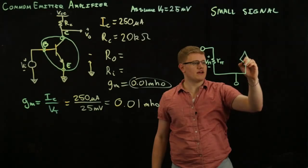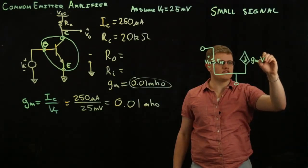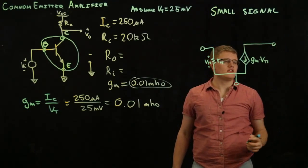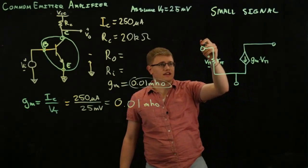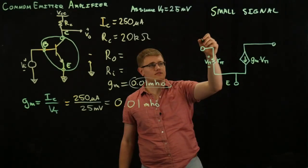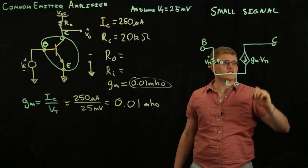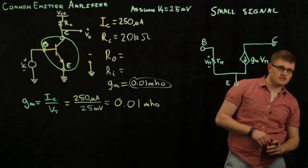And we will have, right over here, R pi, V pi. A voltage dependent current source, GM times V pi. And if we label these nodes, we'll find that this is the emitter, this is the base, and this is the collector. And so, that's our BJT just translated into small signal analysis.